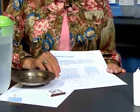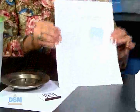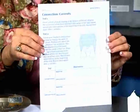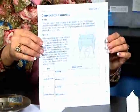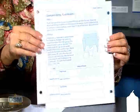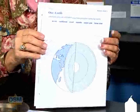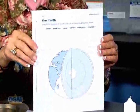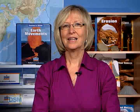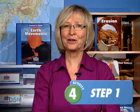Make copies of activity sheet four for each student. You will also need activity sheet one. In this activity, students will learn more about what happens inside the Earth's mantle.